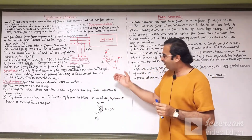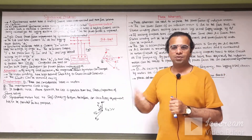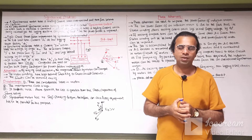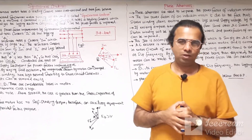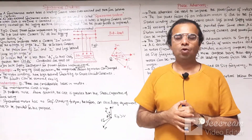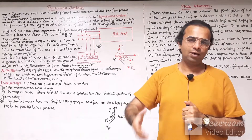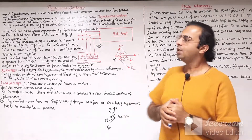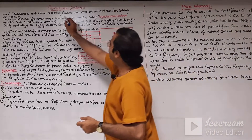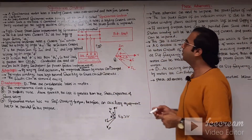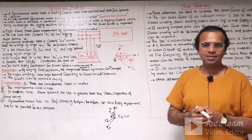The first improvement technique we are going to discuss is the synchronous condenser. When a synchronous motor is running at no load under over-excitation conditions, it takes a leading current from the main supply. A synchronous motor takes a leading current whenever over-excited, and therefore it behaves as a synchronous capacitor.